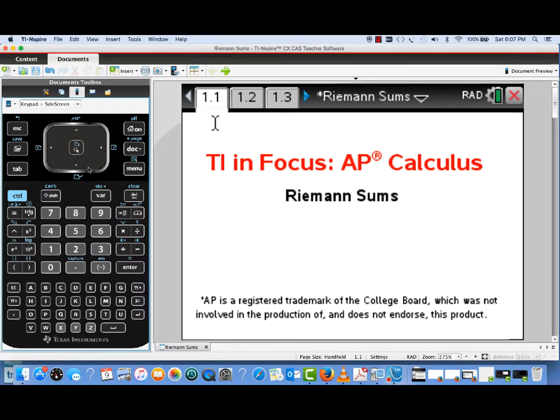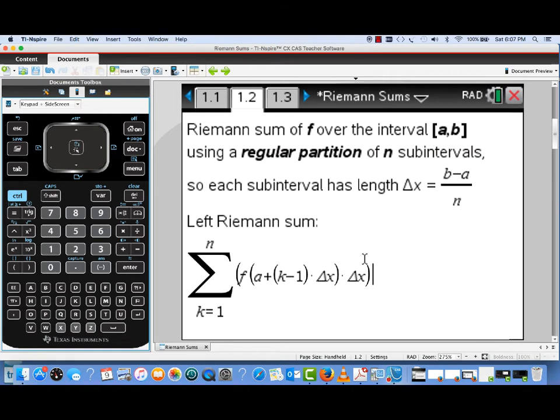Now to start out with, let's review what a Riemann sum is. We're going to be taking a look at Riemann sums of a function over an interval AB using a regular partition. What that means is we'll subdivide the interval into equal length subintervals, each will have length B minus A over N.